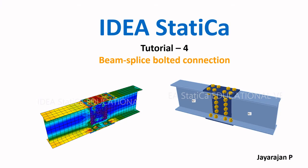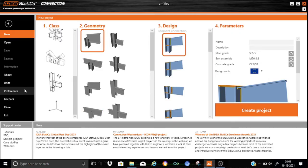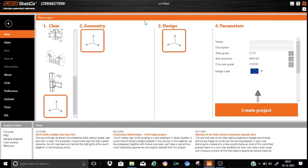Hello, a great welcome to IDEA StatiCa Tutorial. My name is Jarajn P. This is Tutorial No. 4. Here I will demonstrate how to model and design a beam splice connection. So let us start IDEA StatiCa Tutorial No. 4. We will start from a blank project. Let me write down the name: Synthesis Structure, P1 splice. We will keep the steel grade as S275, the bolt assembly M20 8.8, and the concrete grade as C25/30. The splice design will be performed as per the Euro code.